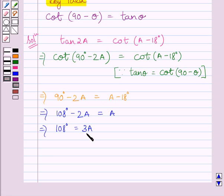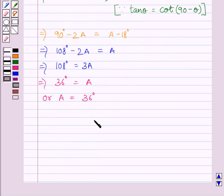Now, dividing both sides by 3, we get 36 degrees is equal to A. Or we can simply write it as A is equal to 36 degrees. So our required answer is angle A is equal to 36 degrees.